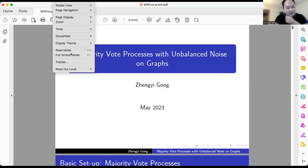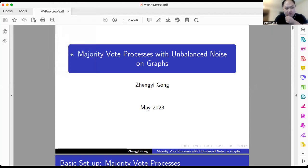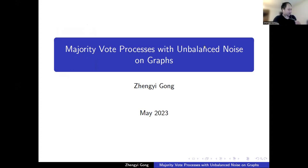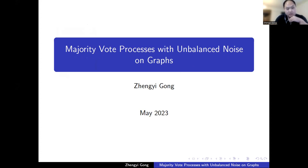Good morning — or afternoon in Kyiv. The title of today's talk is majority vote processes with unbalanced noise on graphs, which is part of the speaker's thesis project. We start with a warm-up on the majority vote process, which is a continuous-time Markov process defined on a graph G.